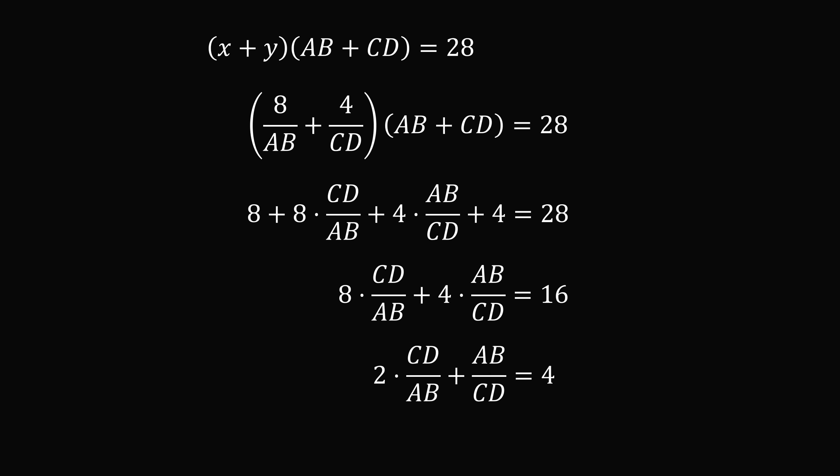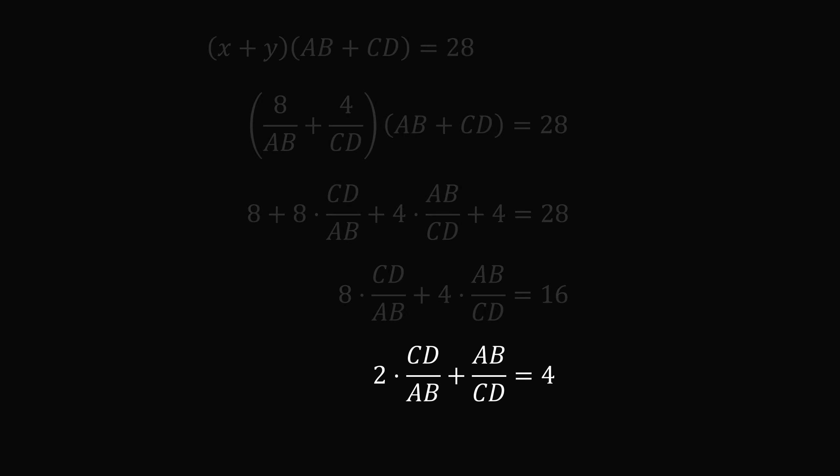This gives 2 multiplied by CD over AB plus AB over CD is equal to 4. Let's focus on this equation.